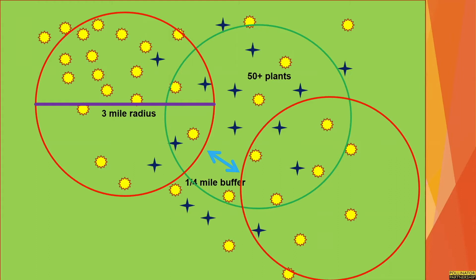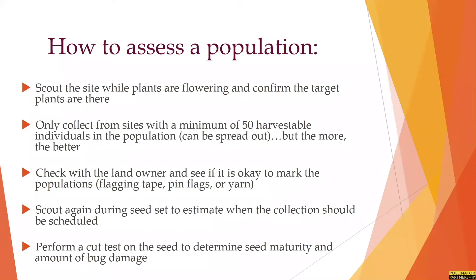We encourage seed collection sites that have multiple species from our target plant list, as this can allow for multiple collections to occur and scouting and assessing for multiple species to happen at once.